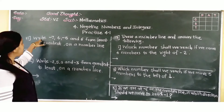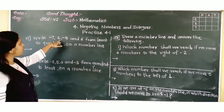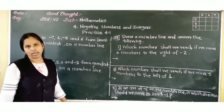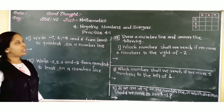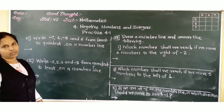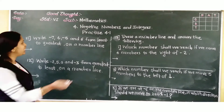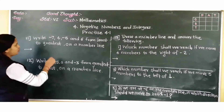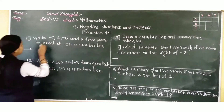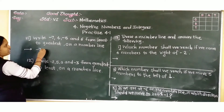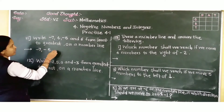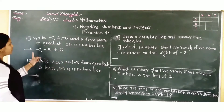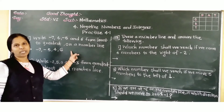Question number 11: write minus 7, 4, minus 5 and 6 from least to greatest — meaning arrange in ascending order. Which is the least number? Minus 7. Then minus 5, then 4, and then 6. So from smallest to largest.